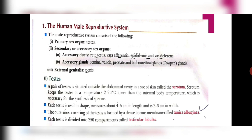Let us start with the primary sex organ, that is the testis. In the human male, a pair of testes is situated right outside the abdominal cavity in a muscular sac of skin called the scrotum. Scrotum helps to keep the temperature of the testis 2 to 2.5 degrees Celsius lower than the internal body temperature, as that is the optimum temperature required for the process of spermatogenesis. Each testis is oval in shape, measuring about 4 to 5 centimeters in length and 2 to 3 centimeters in width. The outermost covering is a dense fibrous membrane called the tunica albuginea.